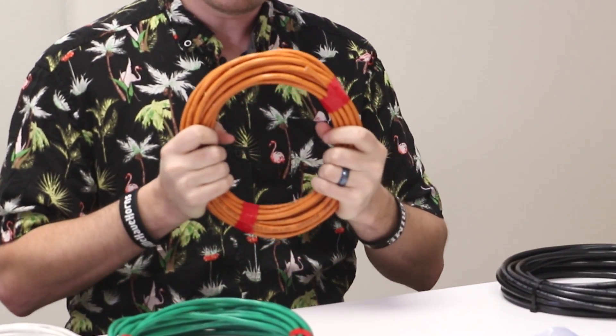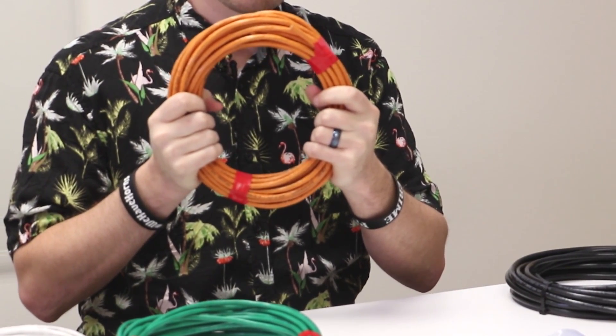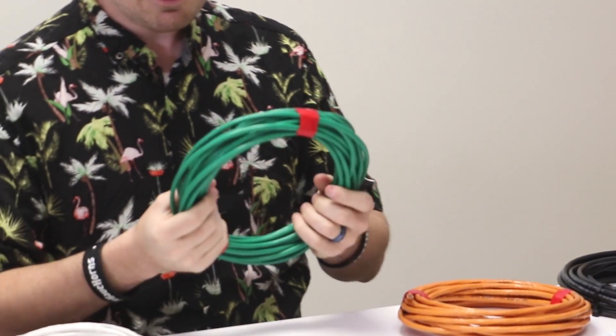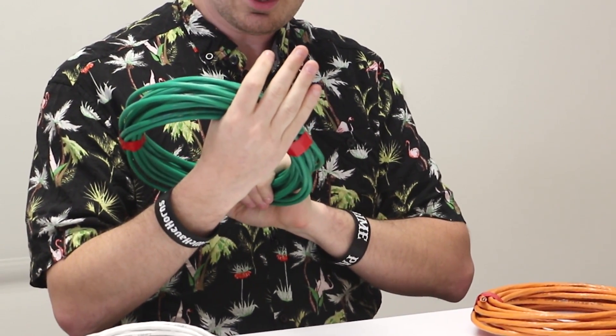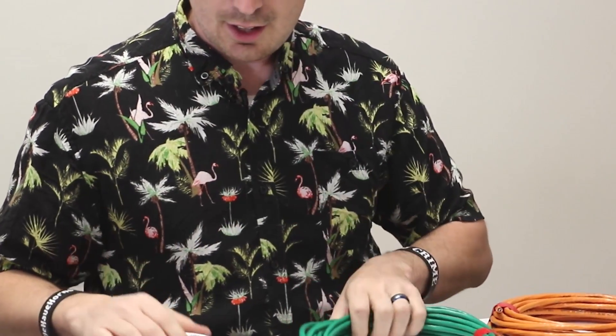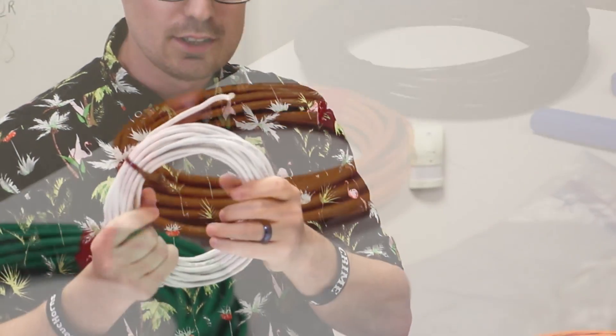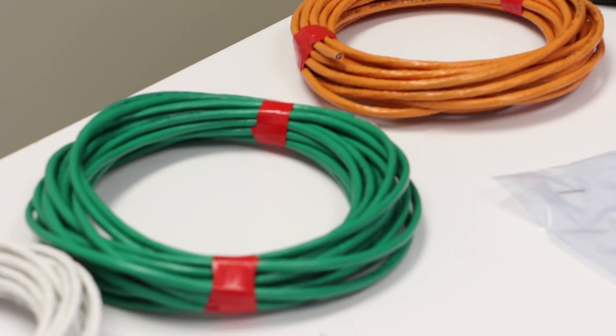We have Cat6. It's got the plastic separator inside without the foil. We have Cat5E Shielded. It's got a beautiful shield inside but no separator. And Cat5 unshielded. It's just all twisted together pretty much.